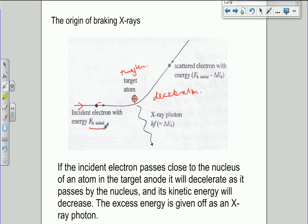Initially, the electron had a certain amount of kinetic energy, called Ek initial. As it passes the tungsten atom and is decelerated, it will lose a certain amount of kinetic energy, the change in kinetic energy denoted by delta Ek.